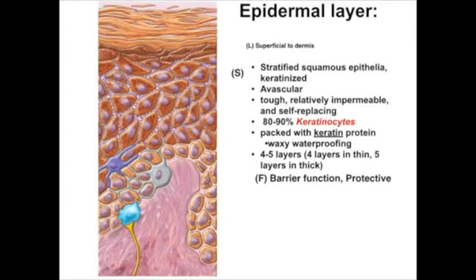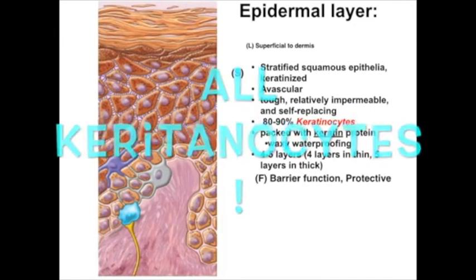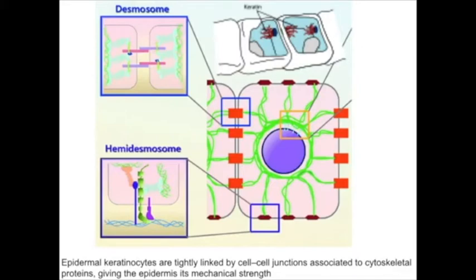The cells that make up the stratified squamous epithelia are called keratinocytes, named because of the large amounts of keratin protein that they have. Different types and levels of keratin protein are found in the cells of each layer. The more superficial keratinocytes are little but sacks of packed keratin, which provide the waxy waterproofing quality of skin, though all cells in the epidermis are considered keratinocytes. The keratin in deeper levels makes up the cytoskeleton that links anchoring junctions and gives the epidermis its structural integrity and mechanical strength.